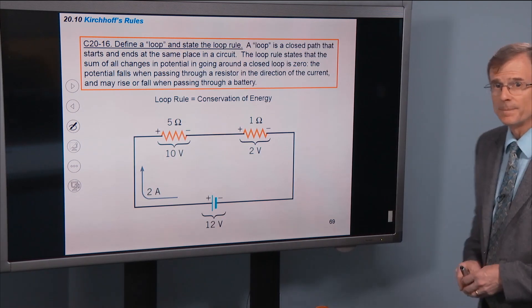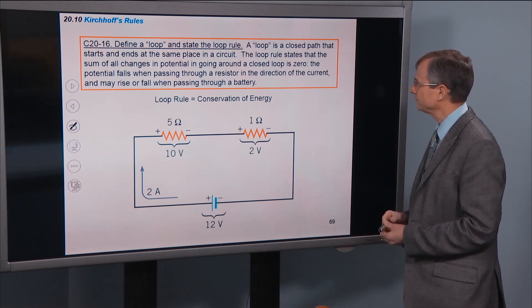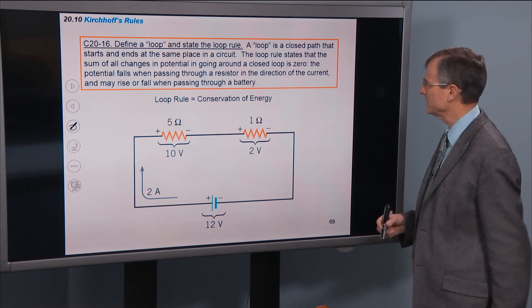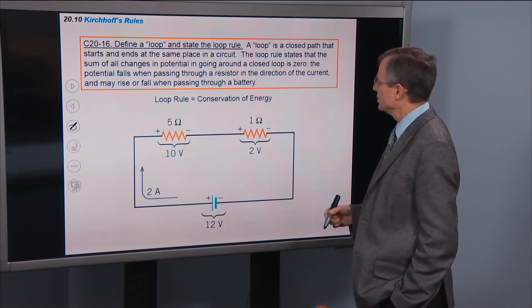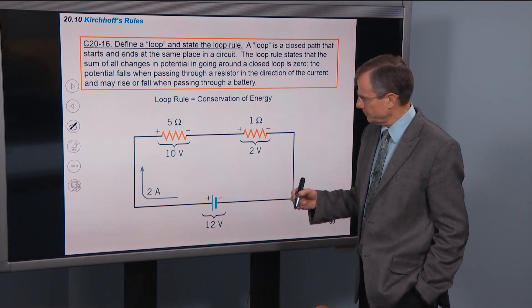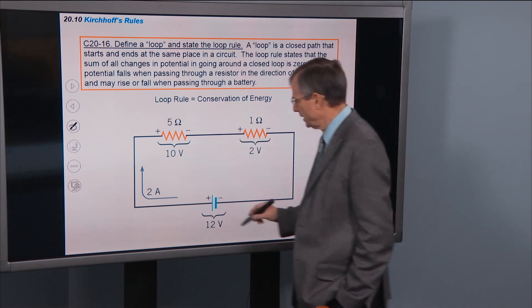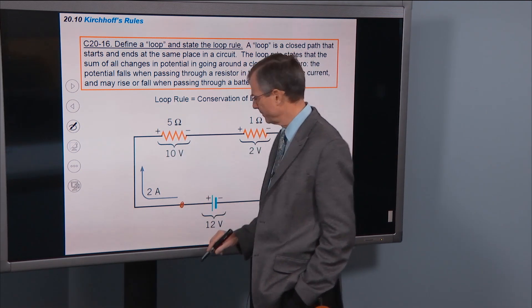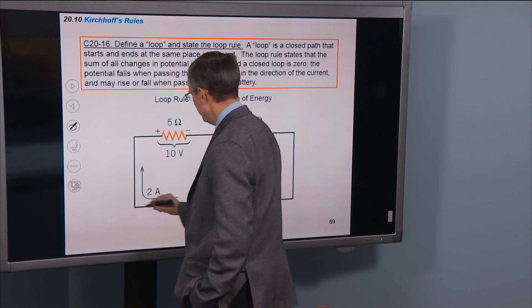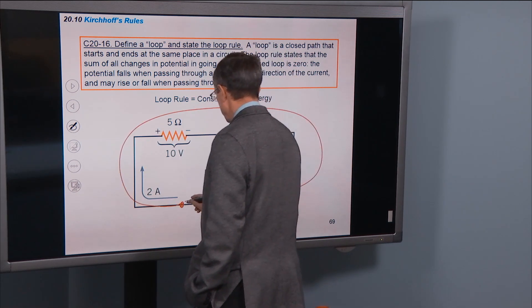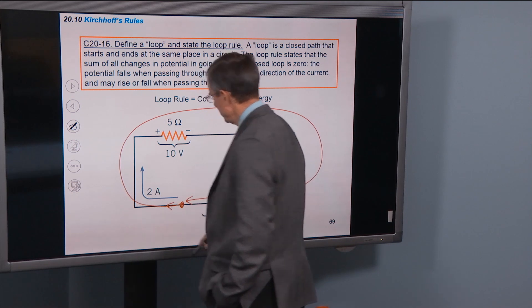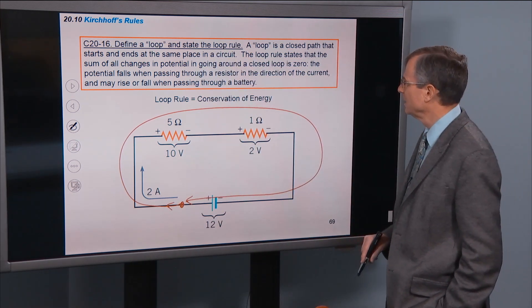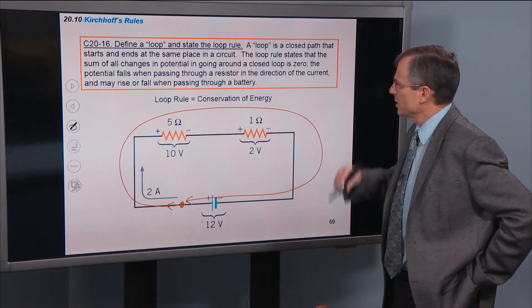That's a junction rule. What about the loop rule? A loop is a closed path that starts and ends at the same place in a circuit. So here's a single loop circuit. If I say I'm going to start here and I'm going to go around this circuit clockwise. I'm going to go all the way around the circuit and come back to the same point, then that is a loop.